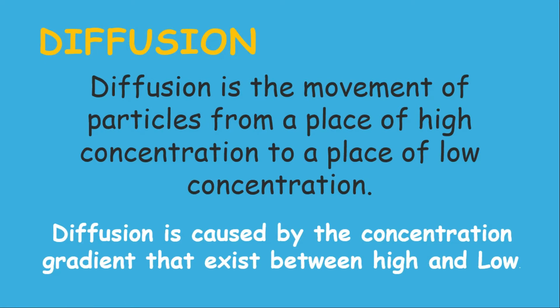Diffusion is the movement of particles from a place of high concentration to a place of low concentration — a similar definition to passive transport. Diffusion is caused by the concentration gradient that exists between high and low. For example, in the lungs, when there is a high concentration of carbon dioxide inside, oxygen moves in while carbon dioxide moves out — that is diffusion taking place.